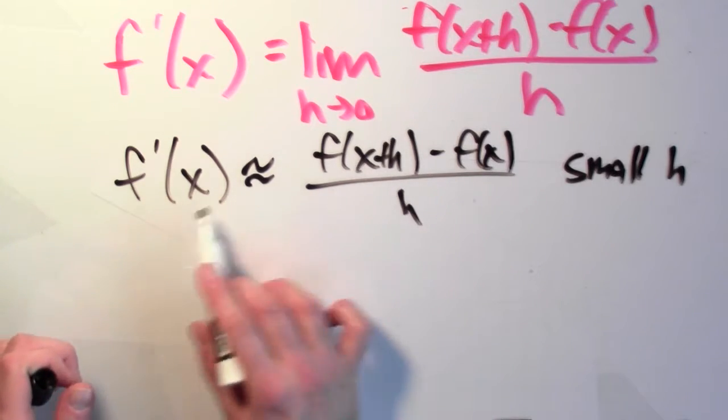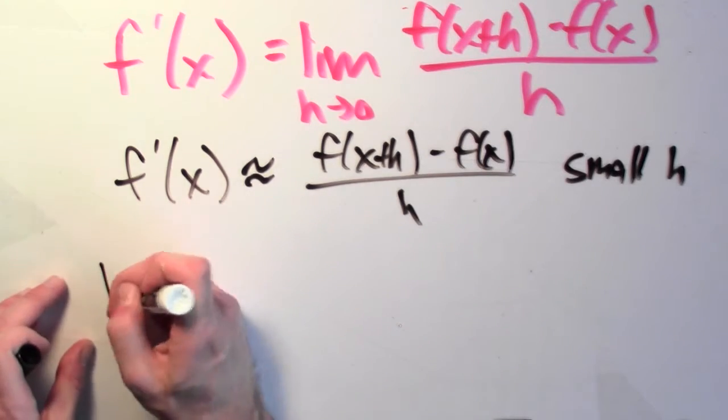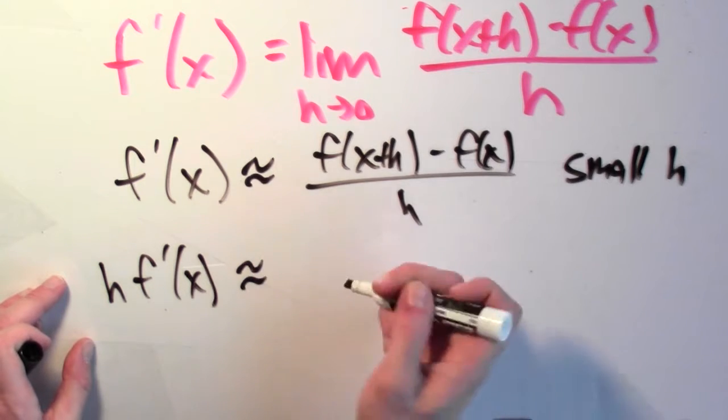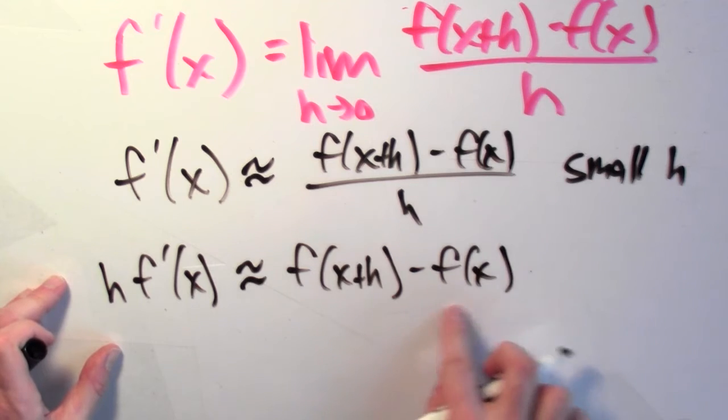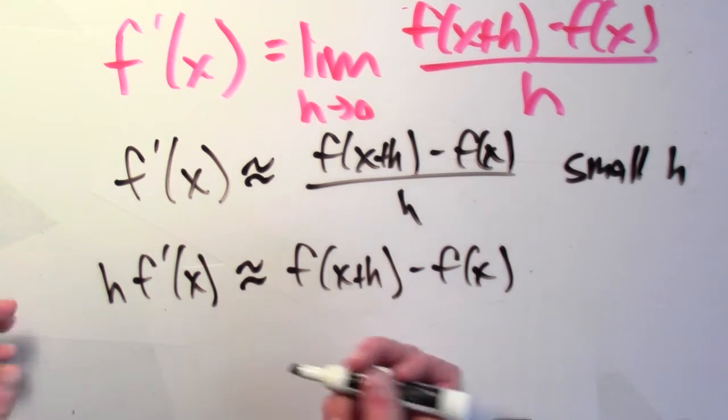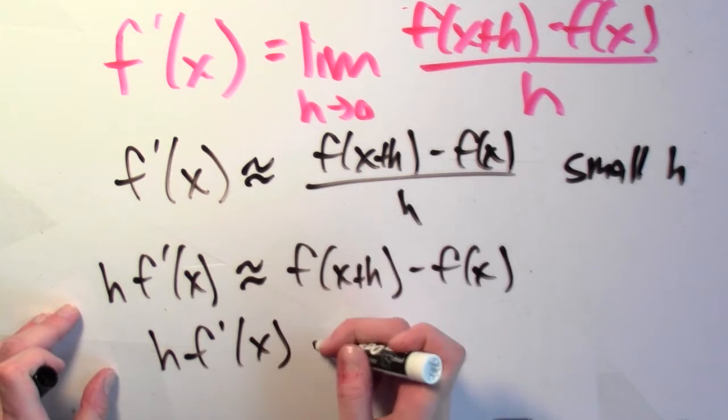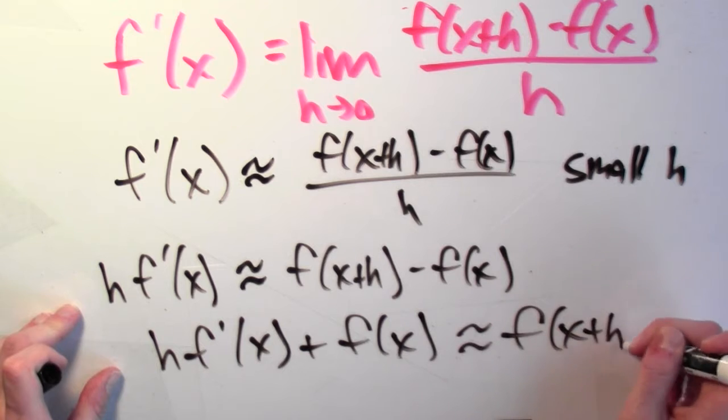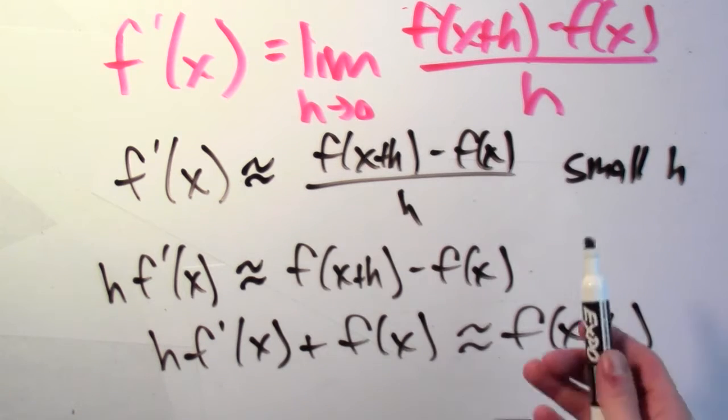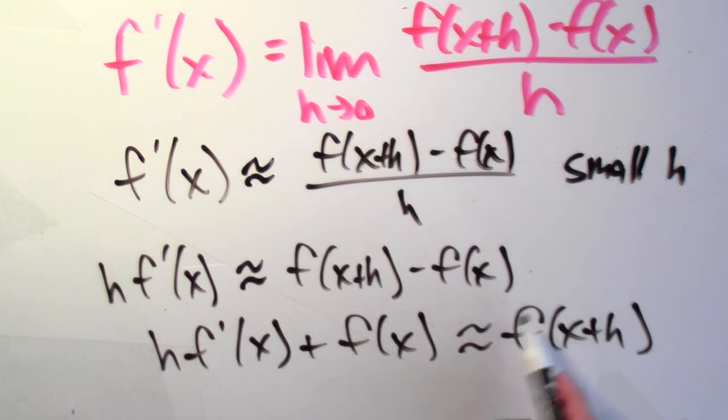Now, I'll multiply both sides of this approximate equality by h, and I'll find that h times f'(x) should be approximately f(x+h) minus f(x), and then I'll add f(x) to both sides, and what I'll get is that h times f'(x) plus f(x) should be approximately f(x+h). And that's the statement that we had before, right?